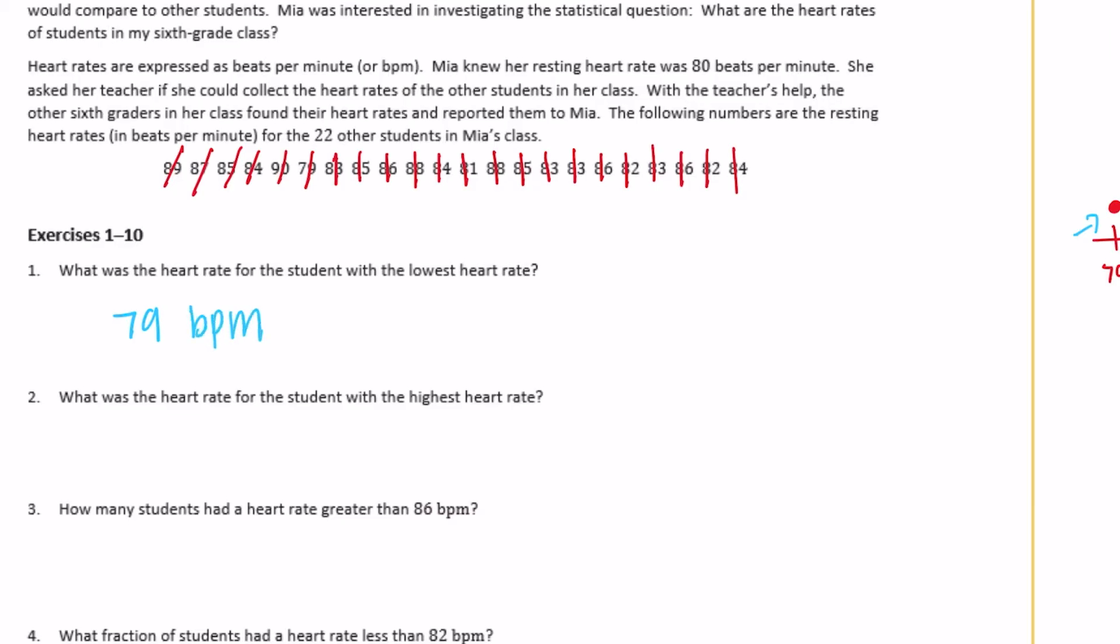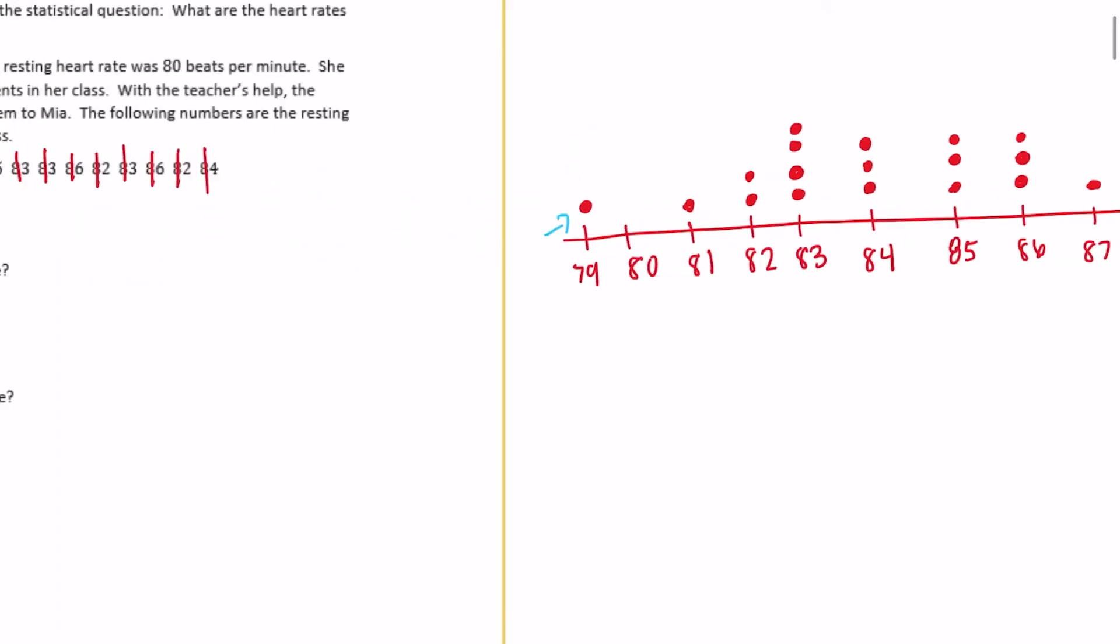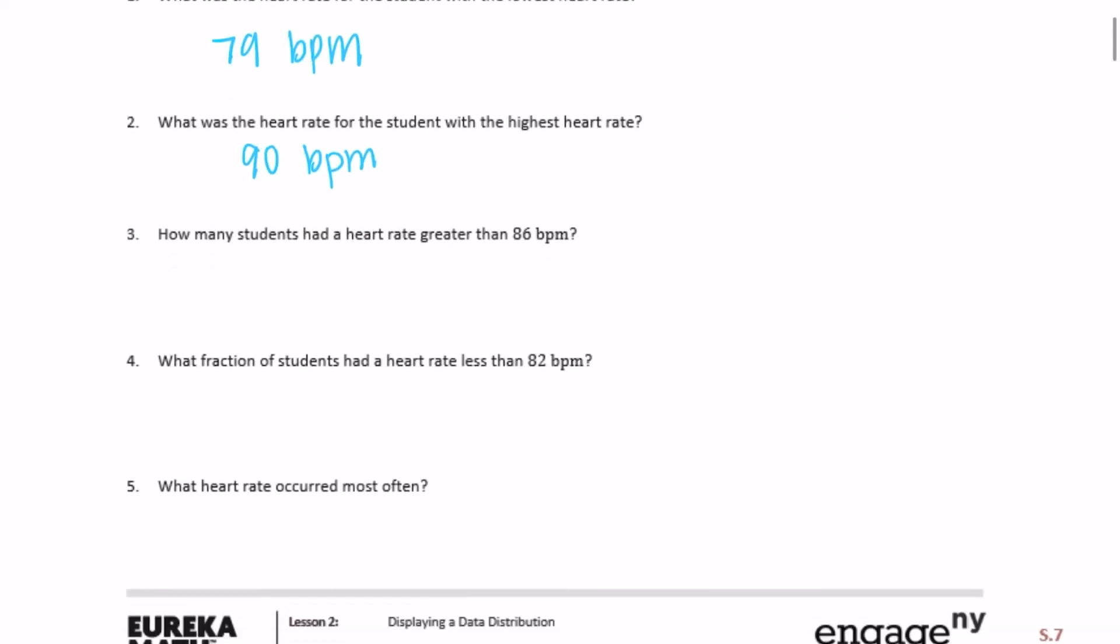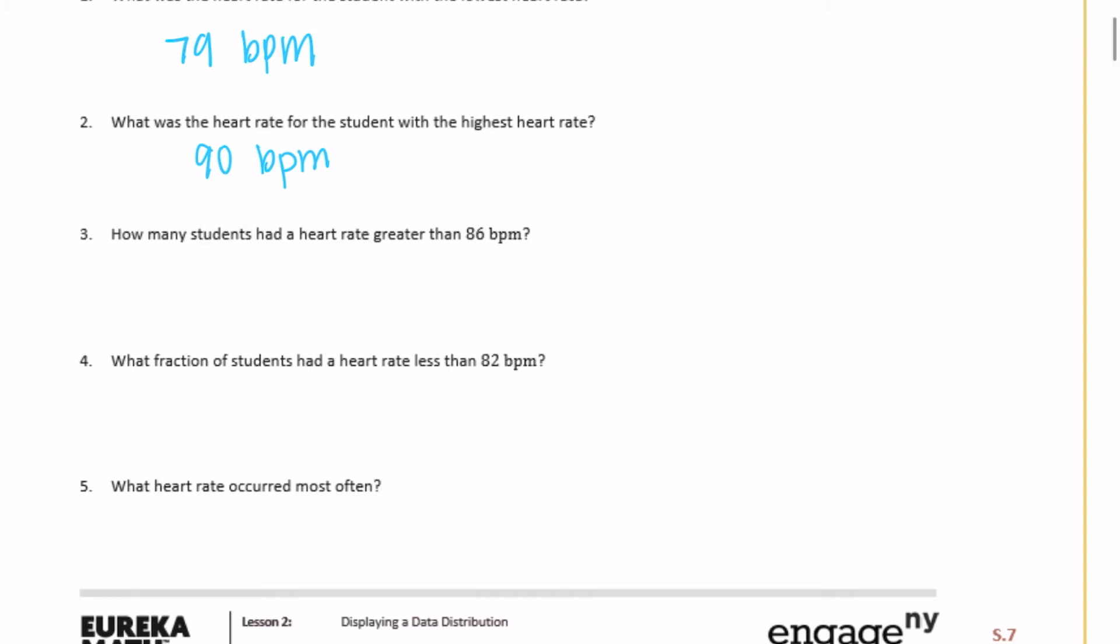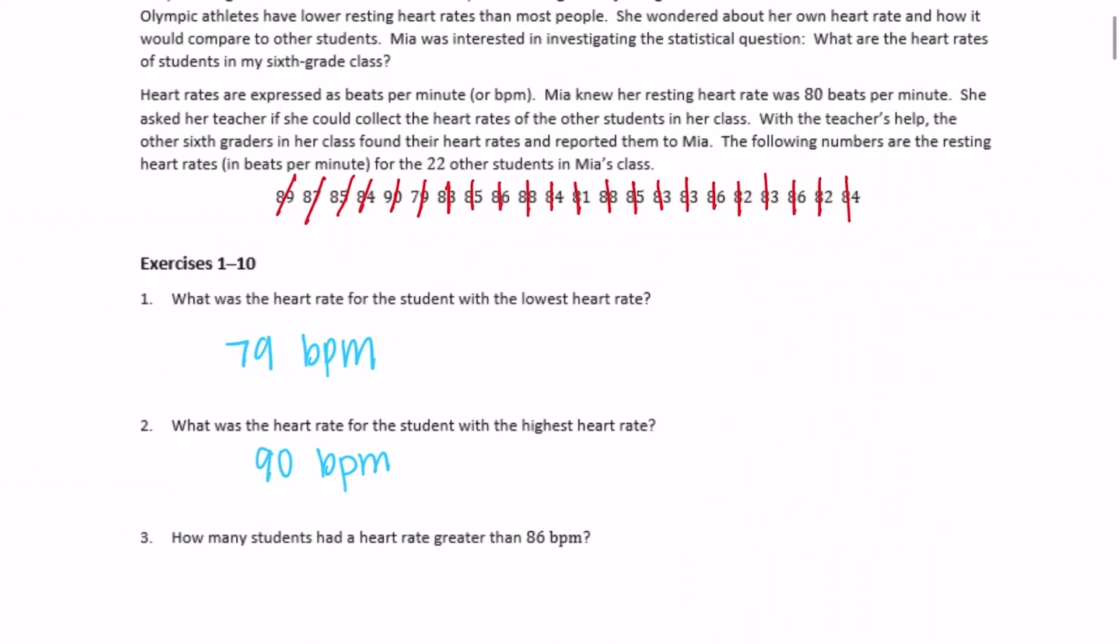What was the heart rate for the student with the highest heart rate? So now what's the highest heart rate? It was here, 90. How many students had a heart rate greater than 86? So we want greater than 86, meaning not 86. So we're going to skip 86. So how many had greater than 86? So anything this way. So one, two, three, four, five. So that would be five students.